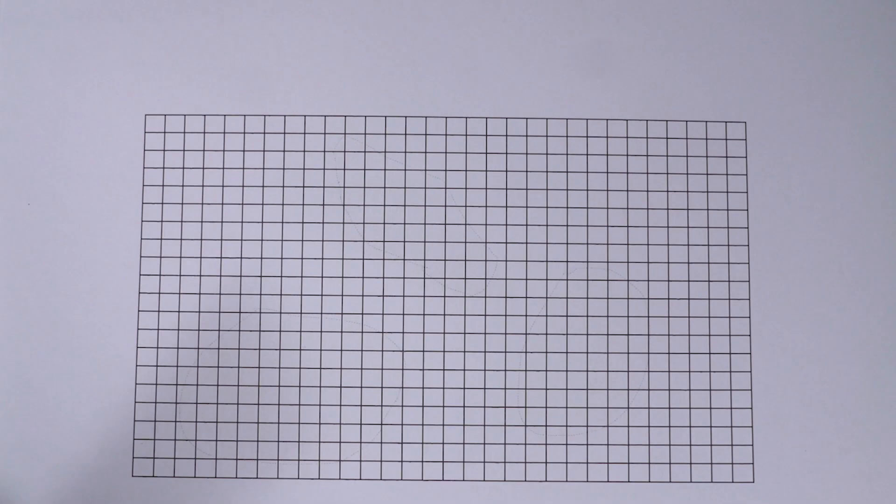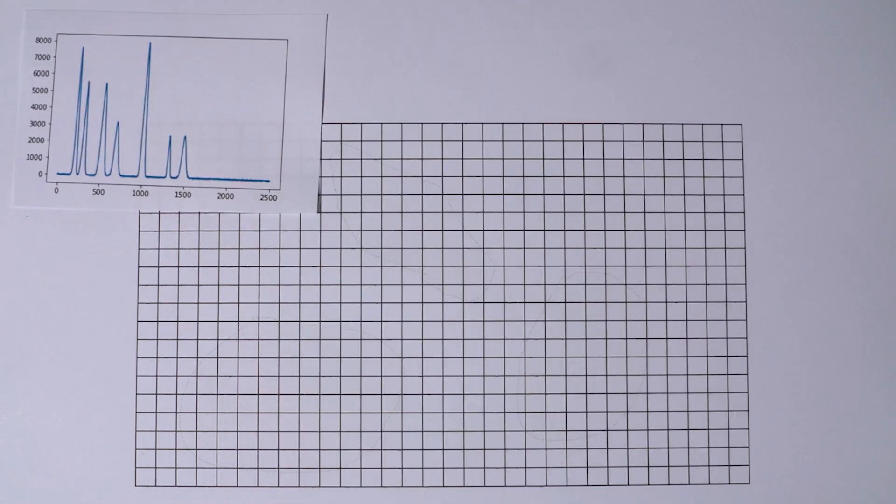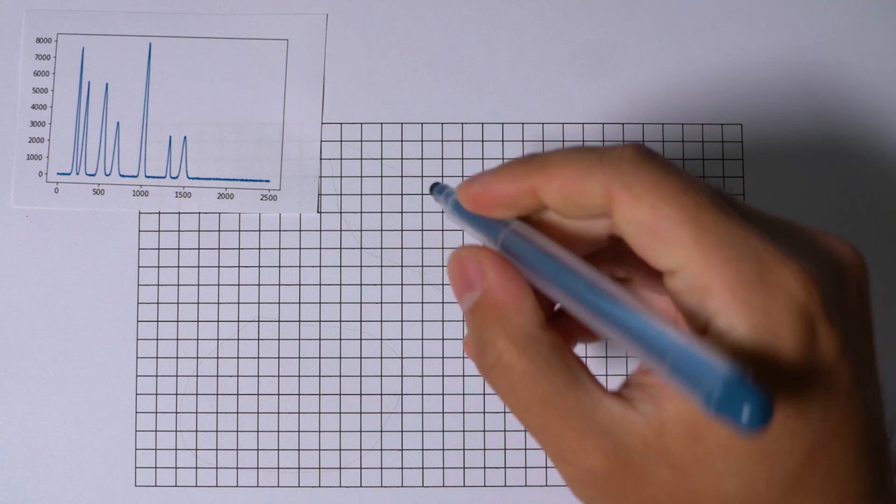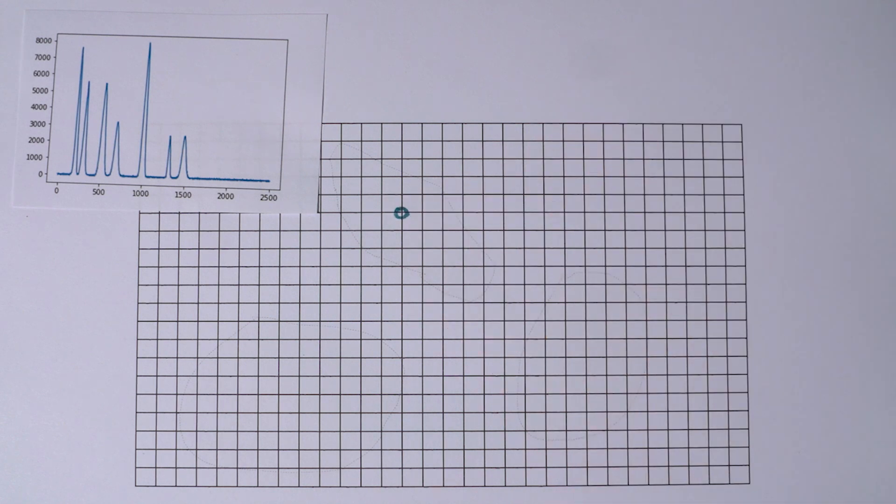But with a Raman or infrared microscope, we can assign a number of measurement points distributed in the region of interest and we let the device take spectrum from each of them automatically.